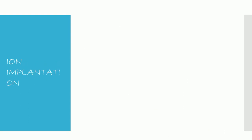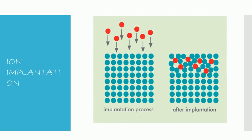The last step is ion implantation. Here we force impurity atoms to strike and penetrate into the silicon wafer crystals. This is similar to doping, which introduces impurity atoms to the crystal lattice structure of the wafer. In the later stages, metal contacts are made in the places needed and we obtain the desired IC.